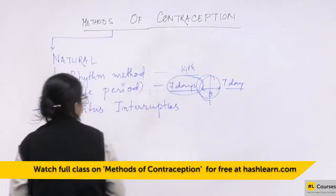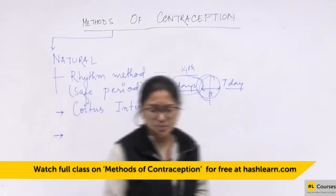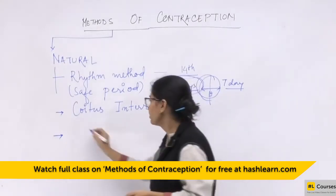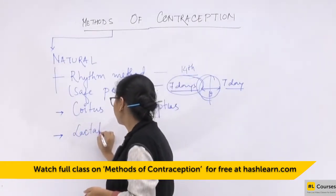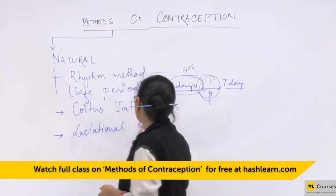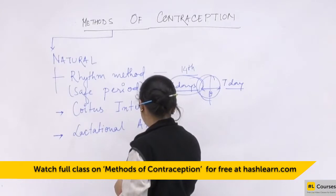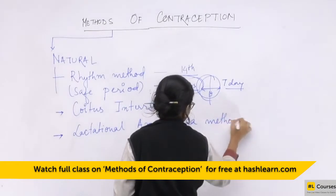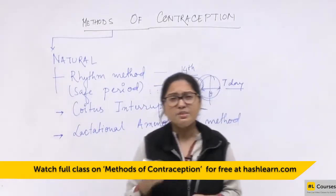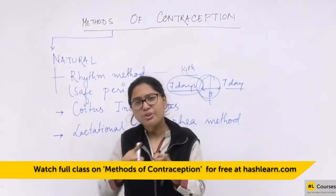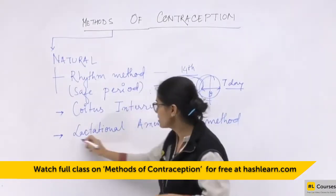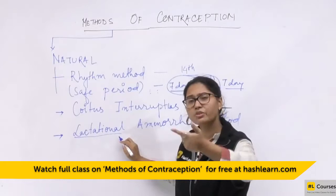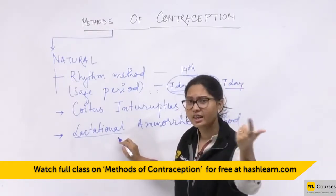The next method is lactational amenorrhea. This is based on the fact that just after parturition, due to intensive lactation — because there is a newborn — nature has favored one child at a time.